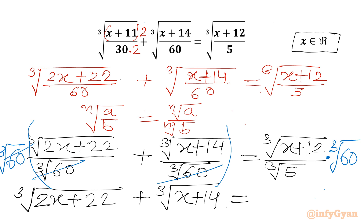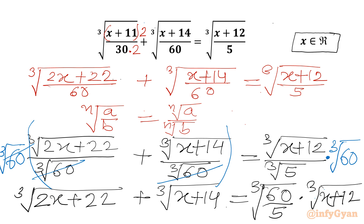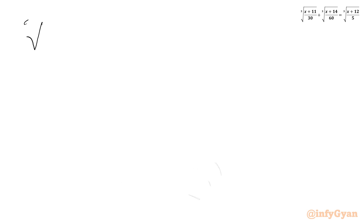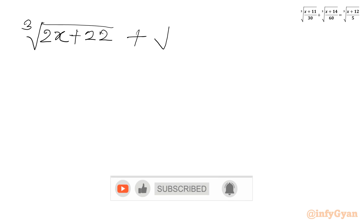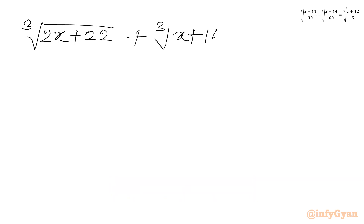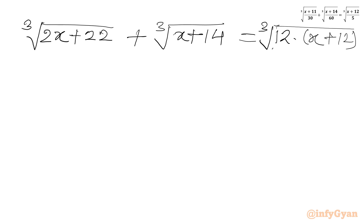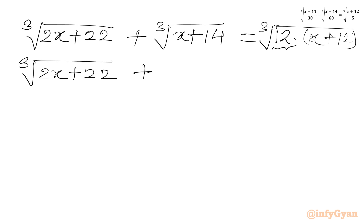So I can write our equation as: cube root of (x plus 12) equals cube root of 60 over 5 times cube root of (x plus 12), which gives us cube root of 12. So the equation becomes: cube root of (2x plus 22) plus cube root of (x plus 14) equals cube root of 12. We can factor 12 as 4 times 3.